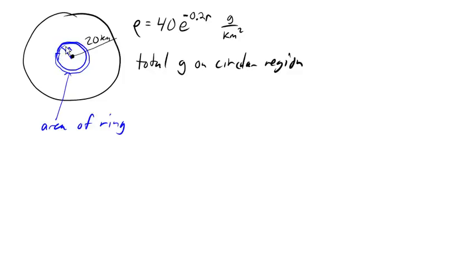Imagine slicing the ring here and unwrapping it. If we unwrapped it we'd end up with this nice little long ribbon where this thickness here would be the little change in r. And then the length of my little ribbon is the circumference of the ring, so the distance around, which would be 2πr.